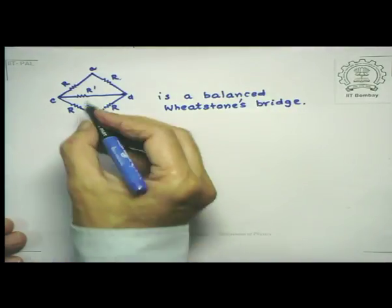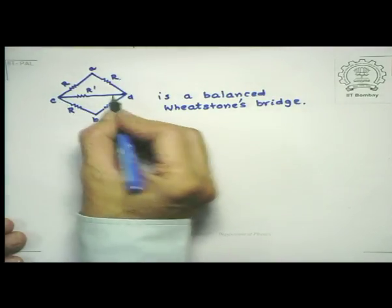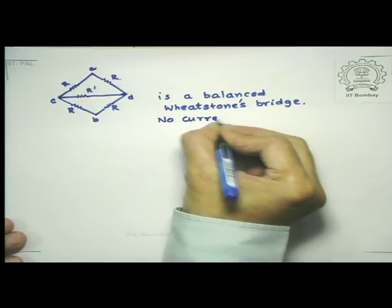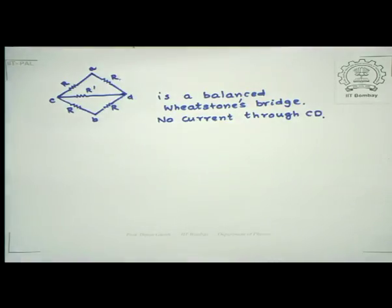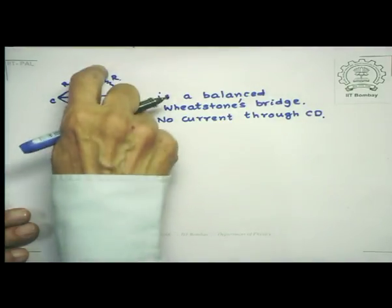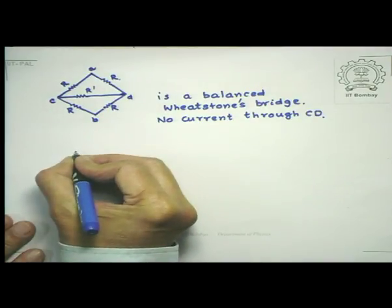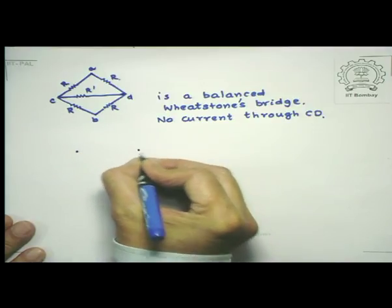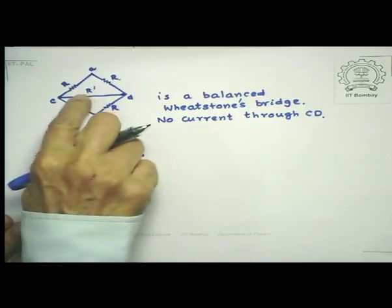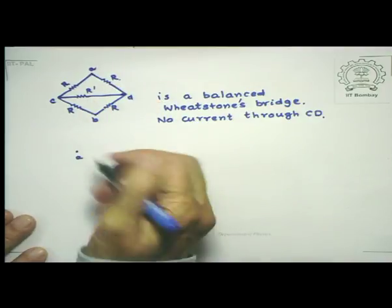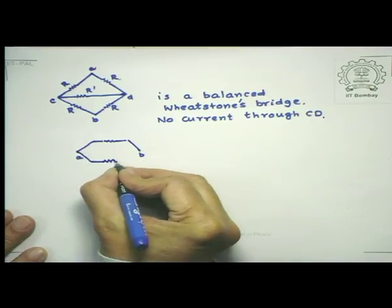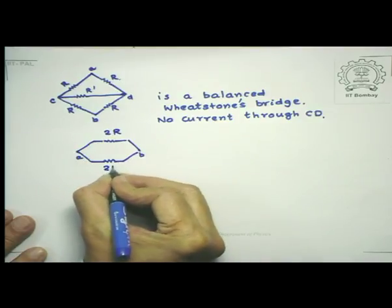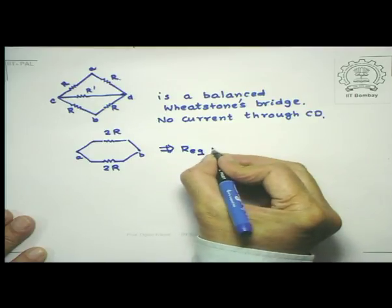Since this is a balanced Wheatstone's bridge, no current flows through branch CD. Therefore CD can be removed from the circuit. What remains is two series combinations: R + R = 2R in the upper path and R + R = 2R in the lower path, connected in parallel between A and B. This gives R_equivalent = R.